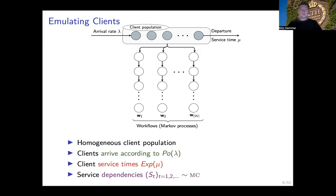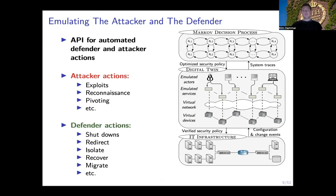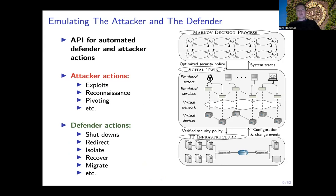We model dependencies among the services using Markov chains. Finally, we emulate the attacker and the defender inside the twin using an API that allows us to run automated attacks and automated responses. Attacks include, for example, nmap scans, port scans, reconnaissance, various types of exploits, and brute force attacks. Response actions include shutdowns, redirections, migrations, isolations, and access control.